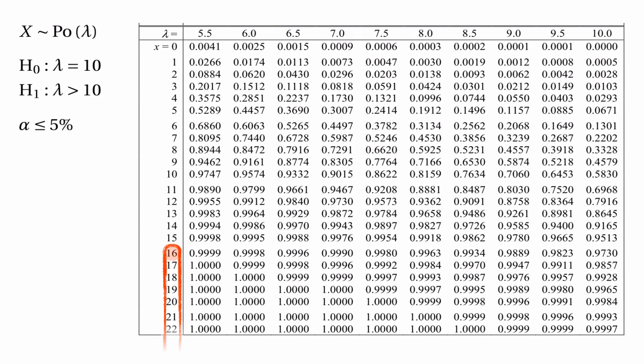The critical value is 16, because that's the first number we come to as we enter the critical region. The exact significance of the hypothesis test is 1 minus 0.9513, which is 0.0487, so the exact significance of this particular hypothesis test is about 4.87%.